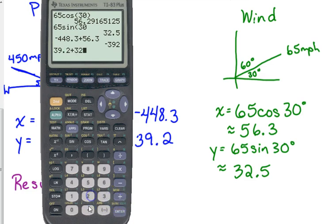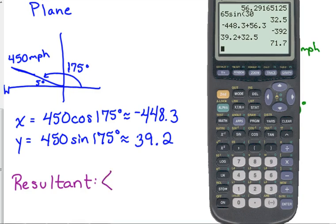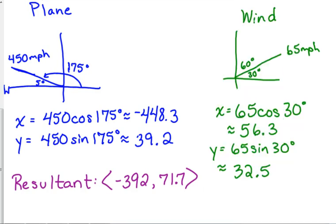Now I will mention that usually when I do these problems, I don't round in the intermediate steps. So if you're looking at one of my answer keys, your answer may be slightly different because instead of rounding to the nearest tenth before I added them together, I just added 450 cosine of 175 plus 65 cosine of 30, put it in all at once. So it may differ by a decimal point or two. That's our resultant. The plane is still in the second quadrant because x is negative, y is positive.